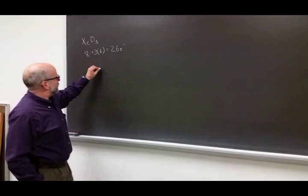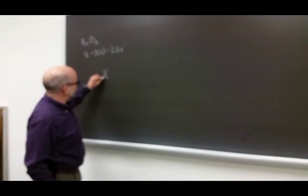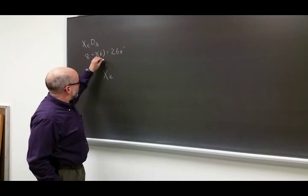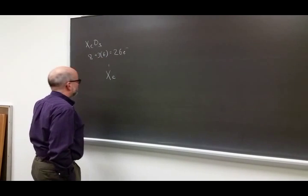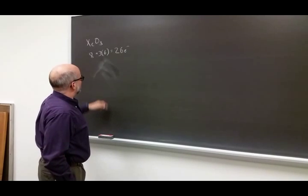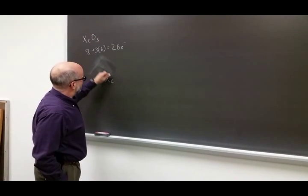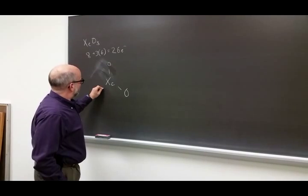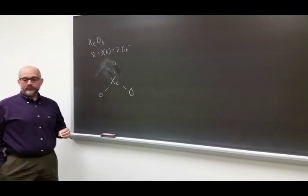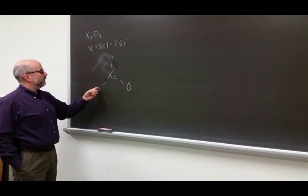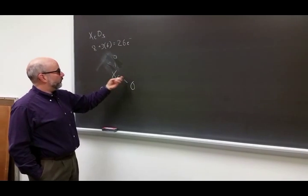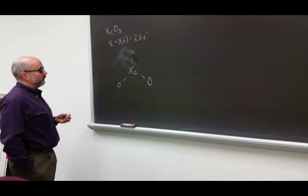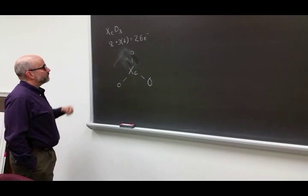The formula implies that xenon is in the middle and the oxygens are on the outside. Start by putting single bonds to hold everything together. That accounts for six of the electrons.